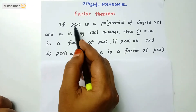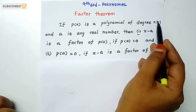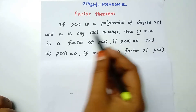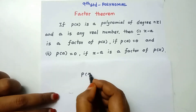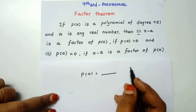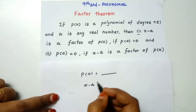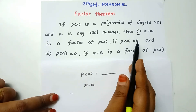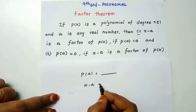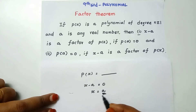That is, P(x) is a polynomial. If you look at the degree n, you will find n is greater than or equal to 1, and a is a real number. Now, x minus a is a factor of P(x). If you look at the value of P(a) equal to 0, we set x minus a equal to 0 to find the value of x, then we apply that value to check if P(a) equals 0.